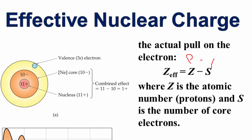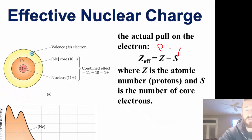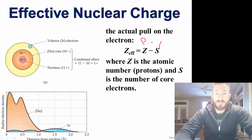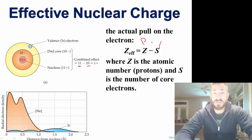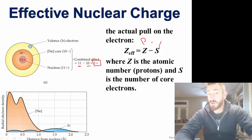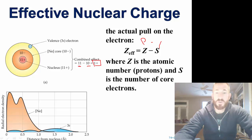How does this work? If you look at something like sodium, sodium has 11 protons but it has 10 shielding electrons. So the effective nuclear charge on the outer electron in sodium is plus one.